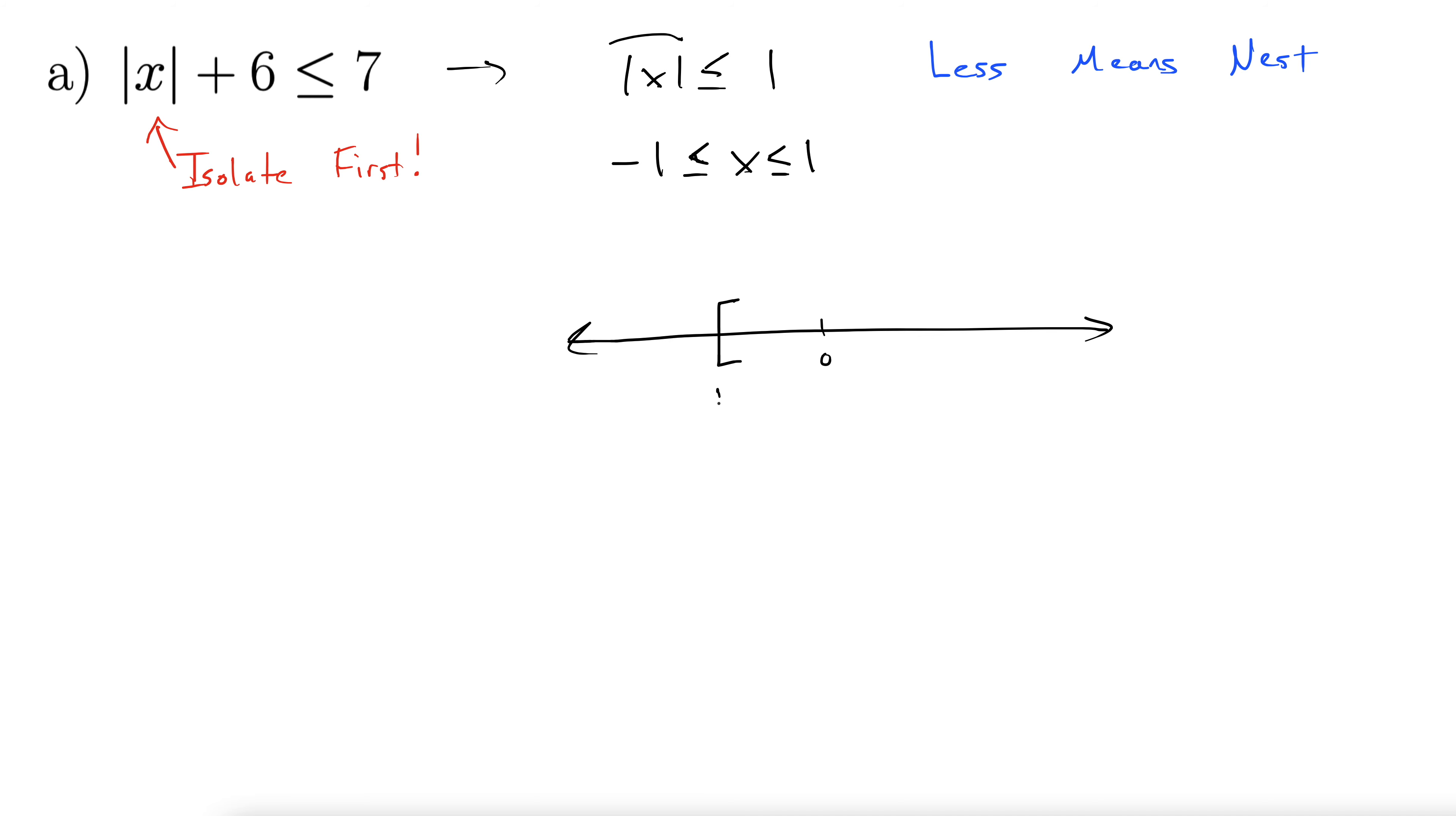There we go, so this is at 1, negative 1, and here we have the same thing at 1, hard bracket. You can also do a filled in circle, that works too. And let's just fill in this interval in between. There we go.